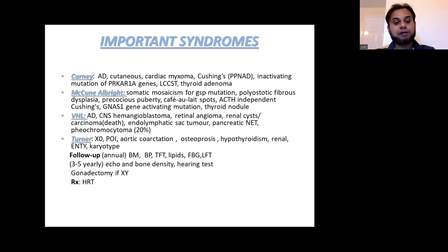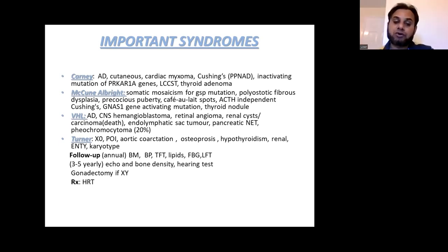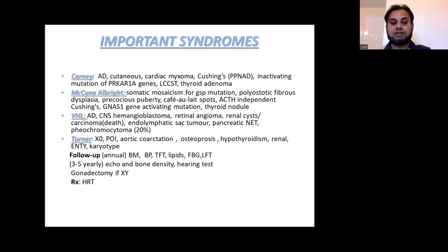Next is Turner syndrome — a very important exam favorite. There were many questions in the last exam from Turner syndrome covering many different aspects. It has a genotype of X0 and presents as primary ovarian insufficiency. Among cardiac problems it can cause aortic coarctation, which is why surveillance is done with three- to five-yearly echocardiogram. It can manifest as osteoporosis, so bone density needs to be checked frequently — also three to five yearly. Hypothyroidism means TFTs need to be checked. Renal, ENT, and karyotype are also important.